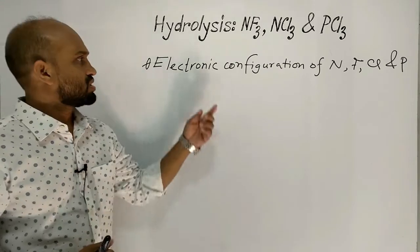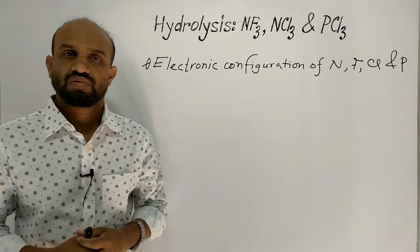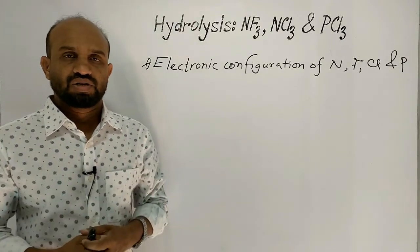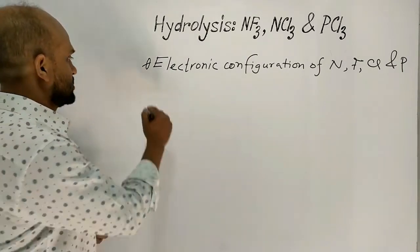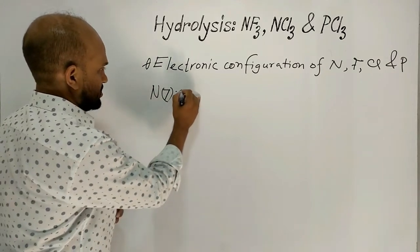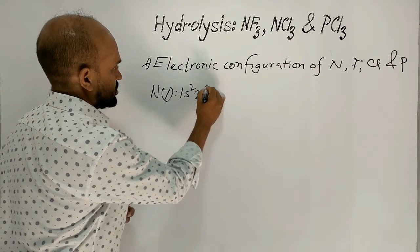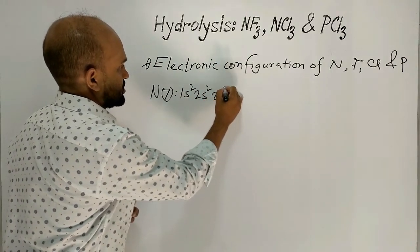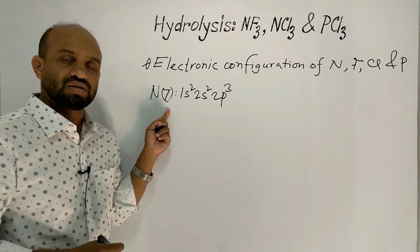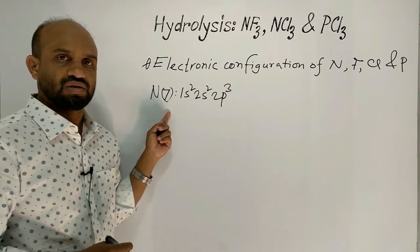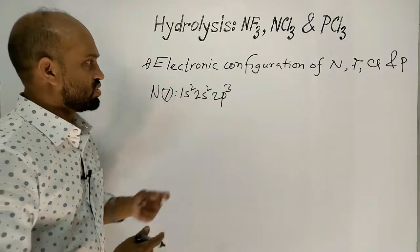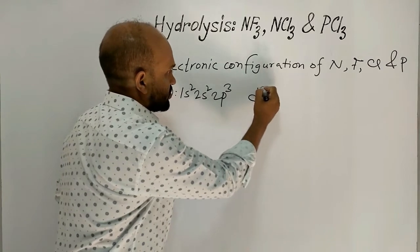The very first point is the electronic configurations of Nitrogen, Fluoride, Chloride and Phosphorus. Let's see the configurations of these elements. First of all, Nitrogen, atomic number seven: 1s², 2s², 2p³. In case of Nitrogen, the second shell is its last shell. The second shell has two subshells, S and P. So Nitrogen has no d orbitals.